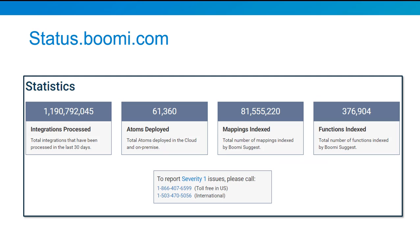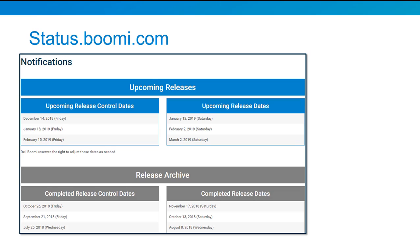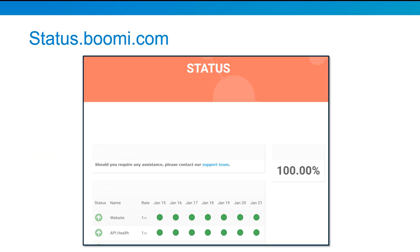We have a statistics page which will give us all the integrations processed, Atoms deployed, mappings indexed, and functions indexed. Also, we have a notifications page which will tell you about upcoming releases as well as our release archives. And our Status page will provide you the status of the Boomi Flow platform.